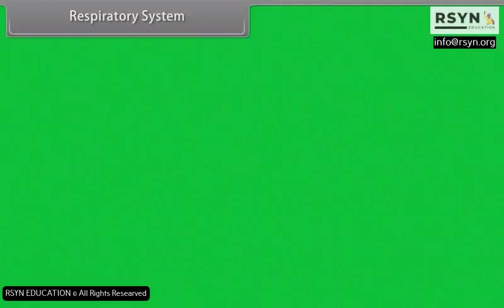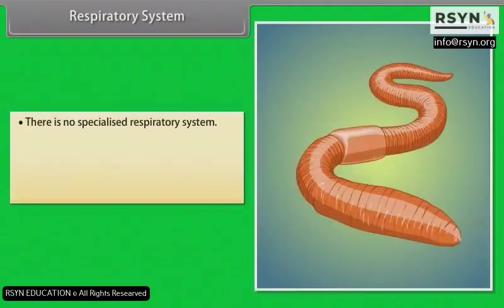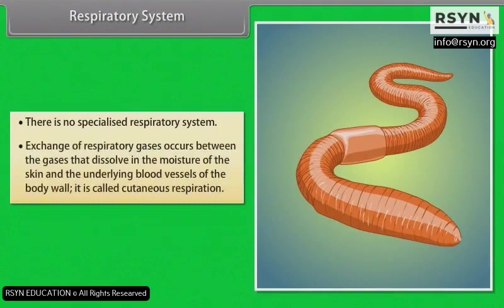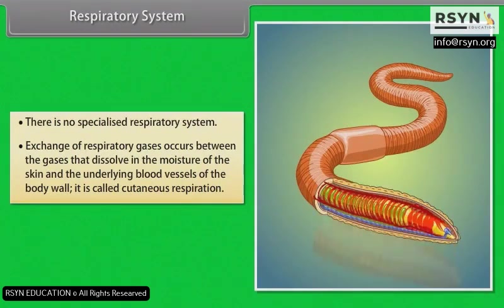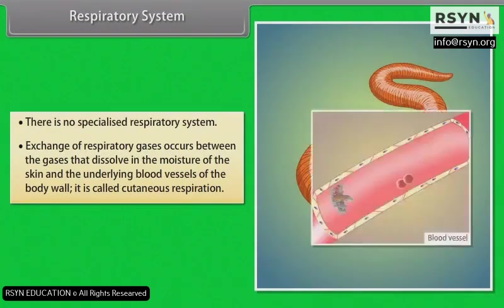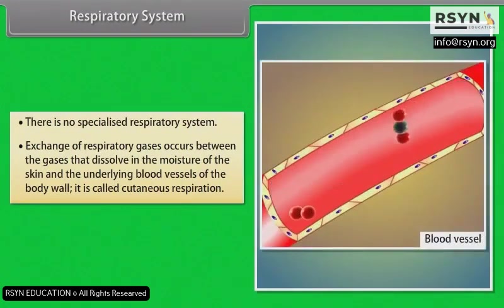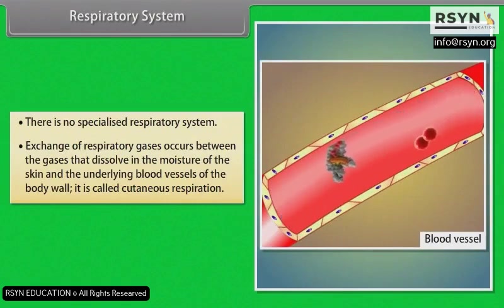Respiratory System: There is no specialized respiratory system in earthworm. Exchange of respiratory gases occurs between the gases that dissolve in the moisture of the skin and the underlying blood vessels of the body wall. This is called cutaneous respiration.